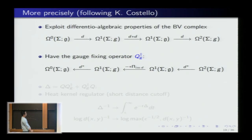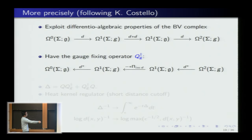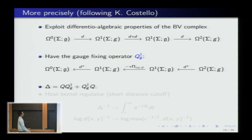A gauge-fixing operator in this algebraic setup is a map that goes the other way; its image gives a restricted space of fields — a Lagrangian or isotropic subspace — over which we formally integrate. For Coulomb gauge: project onto the image of D and take the Hodge star, restricting to the image of D*. On S², that equals the kernel of D* — there are no zero modes, which is what makes S² nice. Analytically, composing operators gives a Laplace-type elliptic operator. The heat kernel provides a regularization with small-time cutoff ε for short-distance singularities: the log singularity is cut off at ε^{-1/2}.